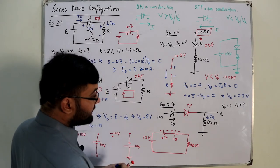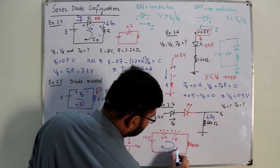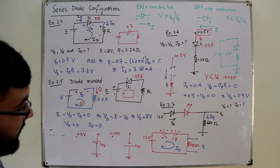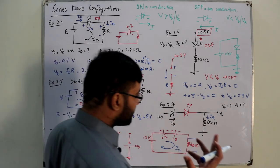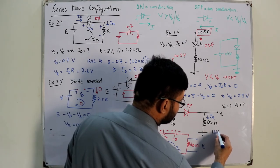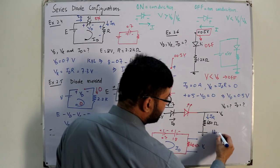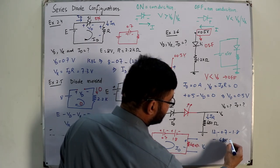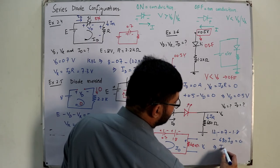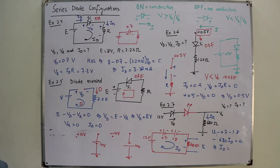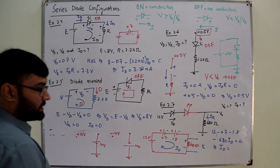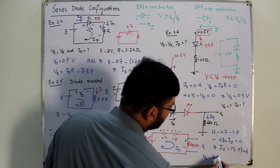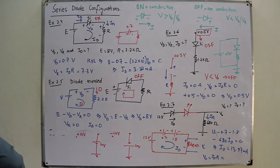Applying KVL: 12 − 0.7 − 1.8 − 680 × ID = 0. Solving for ID gives ID = 13.97 milli-amperes. V-naught equals ID × R = 13.97 mA × 680 Ω = 9.5 volts.